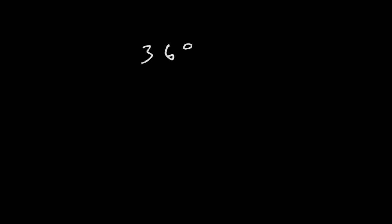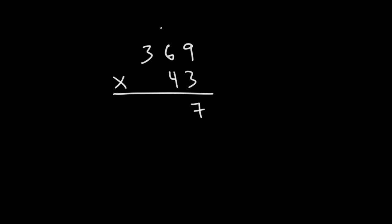Let's try a more challenging example. Let's multiply 369 by 43. Go ahead and work on that. So we have 3 times 9 which is 27, so we'll write the 7 and carry over the 2. 3 times 6 is 18 plus 2, that's 20.